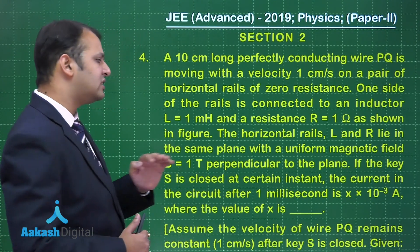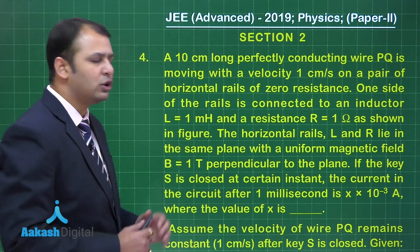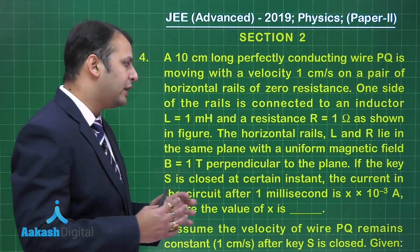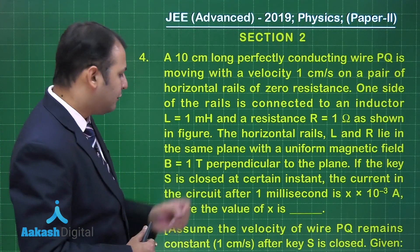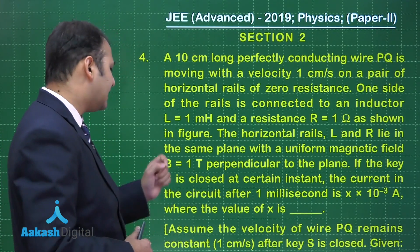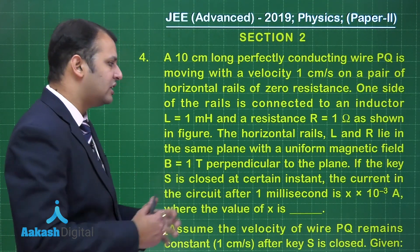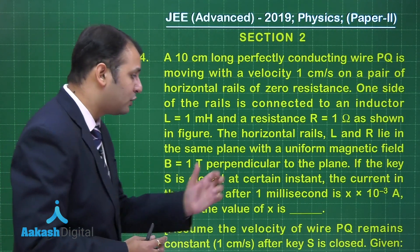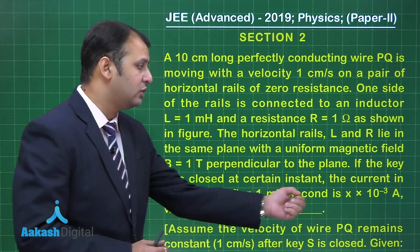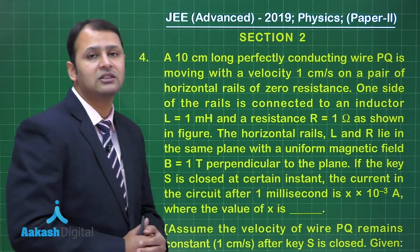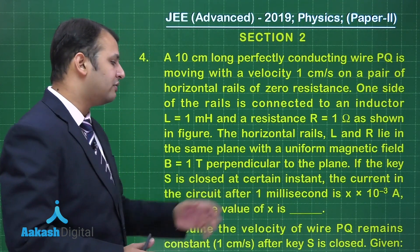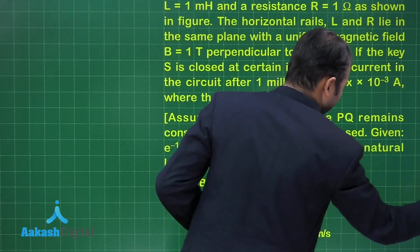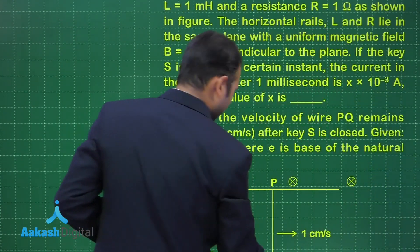The horizontal rails lie in the same plane with a uniform magnetic field of 1 Tesla perpendicular into the plane. If the key S is closed at a certain instant, the current in the circuit after 1 millisecond is X into 10 to the power minus 3 ampere. We have to find the value of X.